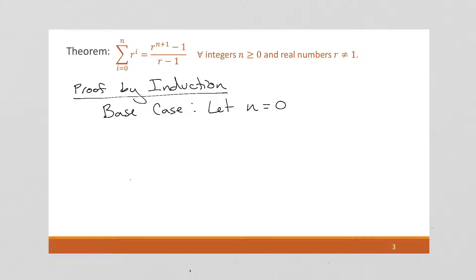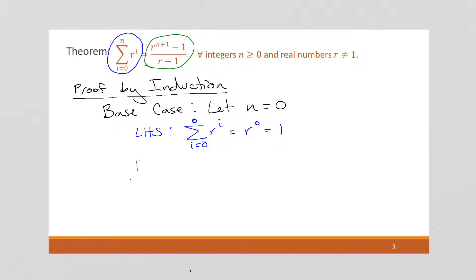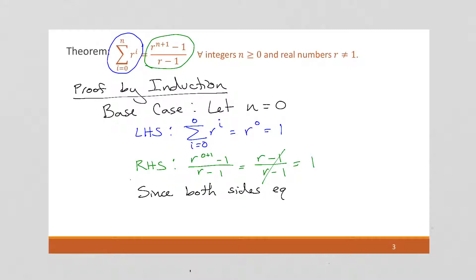So we're going to let n equal 0 — notice it's not 1 this time. As always, we're going to approach this with separate sides. On the left-hand side, we plug in 0, giving us r to the 0, and anything to the 0th power is just 1. On the right-hand side, we have r to the 0 plus 1 power minus 1 over r minus 1, which is r to the first power minus 1 over r minus 1. Those cancel, and we're left with 1. Since both sides equal 1, the base case holds.